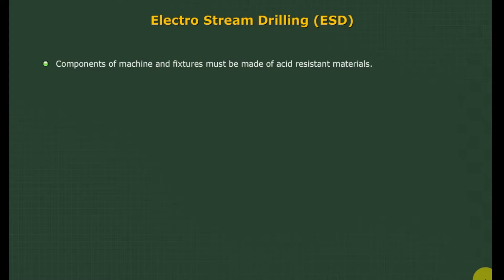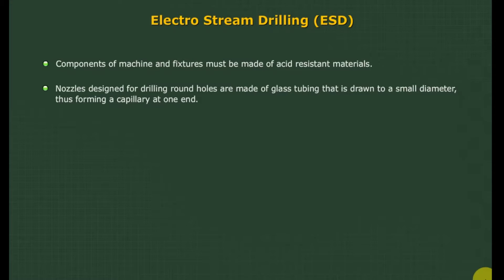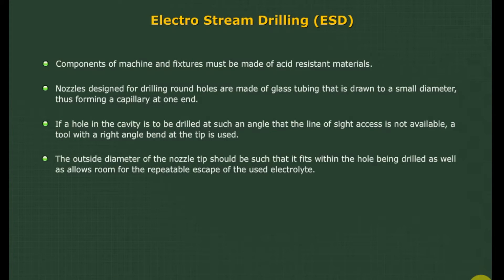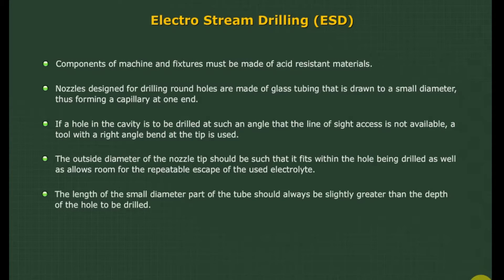Components of the machine and fixtures must be made of acid-resistant materials. Nozzle designs for drilling round holes are made of glass tubing drawn to a small diameter, forming a capillary at one end. If a hole in a cavity must be drilled at an angle where a straight-line approach is not available, a tool with a right-angle bend at the tip is used. The outside diameter of the nozzle tip must fit within the hole being drilled while allowing room for the escape of used electrolyte. The length of the small-diameter part of the tube should always be slightly greater than the depth of the hole to be drilled.